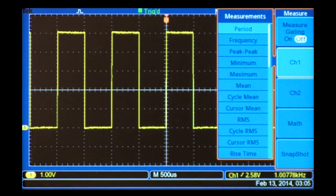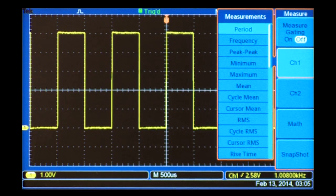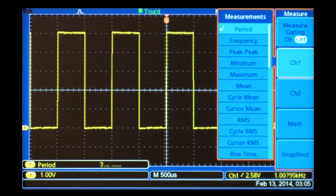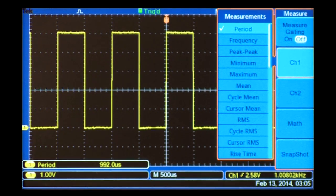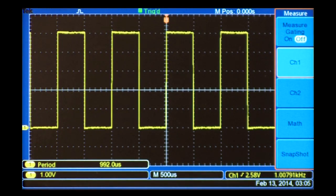Just like cursor measurements, I need to choose which channel I'll be measuring. Then, I specify the type of measurements I want to perform. In this case, a period measurement. For automatic measurements, the scope needs enough information in its memory. To perform a period measurement, the scope needs more than one complete cycle of the signal.